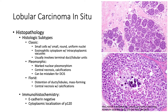The florid subtype shows distention of the ducts and lobules, which can be mass-forming, with central necrosis and calcifications as well. On immunohistochemistry, there will be a negative E-cadherin stain, as with other lobular subtypes, along with cytoplasmic localization of P120.